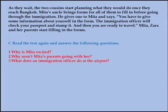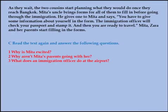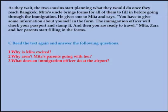Jara's father gives one form to Mitha and says: you will have to provide some information about yourself in the form. And the immigration officer will check your passport — passport means an official document issued by a government certifying the holder's identity and citizenship — and stamp it, giving a seal. Stamp means impress a pattern or mark on a surface using an engraved or ink block. And then you are ready to travel — ready means fully prepared, travel means make a journey. Mitha, Zara and her parents start filling in the forms giving their necessary information.